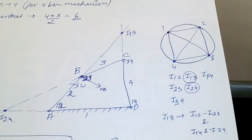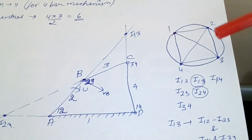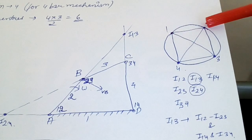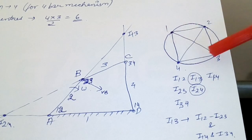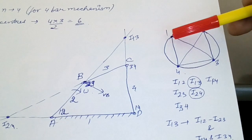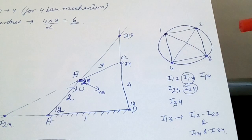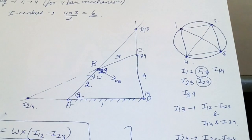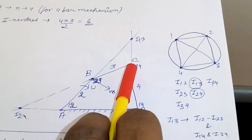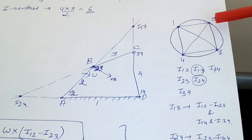To find I13: from link 1 to link 3, you can pass through 1→2→3 or through 1→4→3. So extend the line through I12 and I23, and separately extend the line through I14 and I34. Wherever these two extended lines intersect is the point I13.